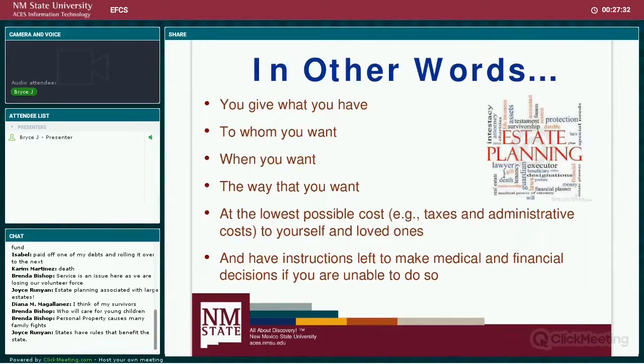The lowest possible tax to yourself and loved ones. And you have instructions left to make medical and financial decisions if you're unable to do so. Because family members, when they're under stress, don't always make the best decisions for medical or financial decisions for you. When you're able to and have a sound mind to be able to make those decisions, you should be making those in conjunction with your family members of what your desires are so that they're not making these decisions during a stressful time.